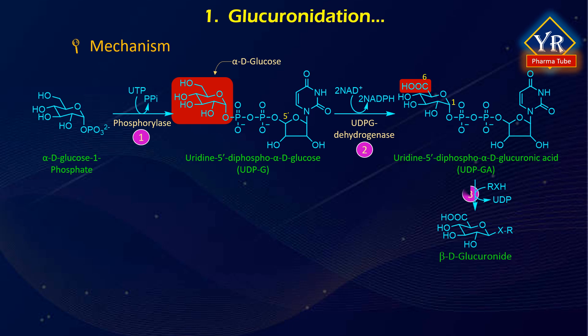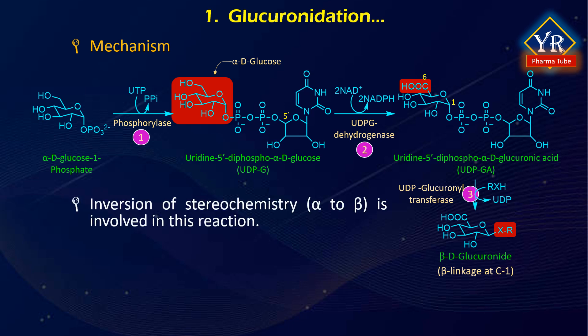In the last step, the glucuronyl group is transferred to the substrate, that is the drug acceptor molecule, by microsomal enzymes called UDP glucuronosyltransferases, leading to the formation of beta-glucuronides. It is to note that the activated UDP glucuronic acid contains D-glucuronic acid in the alpha configuration at the anomeric center, that is at C1. But glucuronide conjugates are beta glycosides, hence the term beta-glucuronides. This means that inversion of stereochemistry is involved in the glucuronidation reaction.